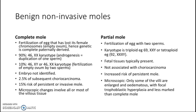Meanwhile, partial mole is fertilization of an egg with two sperms. The karyotype is triploid because it's fertilization of an egg with two sperms — so it's 69XXY, or tetraploid, 92XXXY. In a complete mole, an embryo is not identified, while in a partial mole, fetal tissues are typically present.